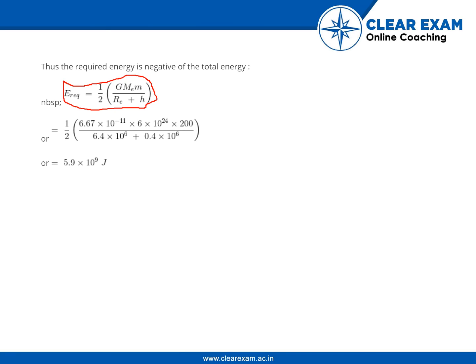So substituting the values, you'll be getting ½ × 6.67 × 10^-11, the value of G, this is mass of Earth, and mass of the small m is nothing but mass of satellite, that is 200, divided by Rₑ 6.4 × 10^6, and it is 400 kilometers above, so 0.4 × 10^6.